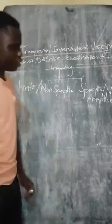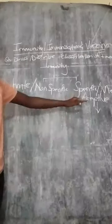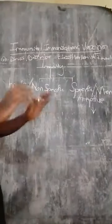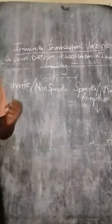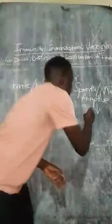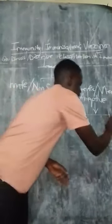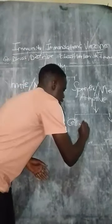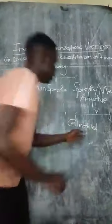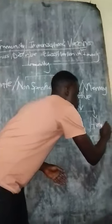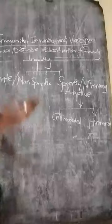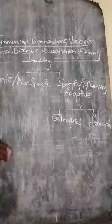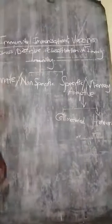Specific, memory, or adaptive immunity is the type of immunity where both antigens and antibodies are used in fighting diseases. It is divided into two classes: cell-mediated immunity and humoral immunity. This type requires close attention as it is more complex.